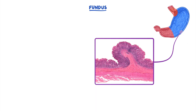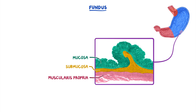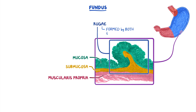Moving on to the fundic stomach — this low power image allows us to see three of the main layers: the mucosa at the top, the submucosa, and the muscularis propria at the bottom. The outer serosa isn't present in this image. The prominent fold visible here is called a rugai, which is formed by both the mucosa and submucosa.